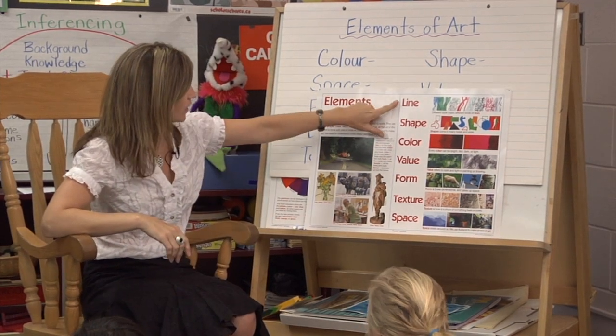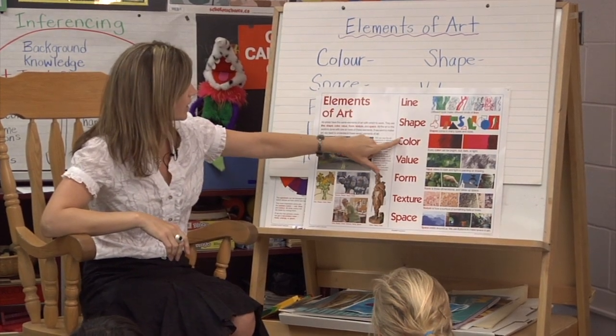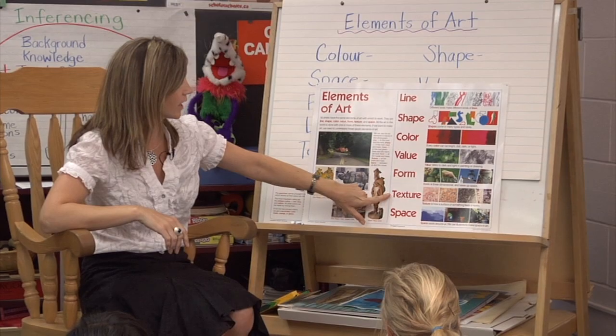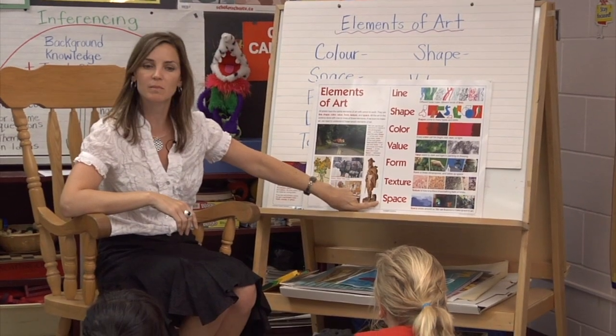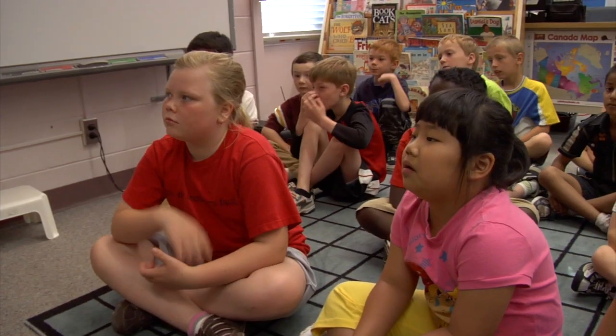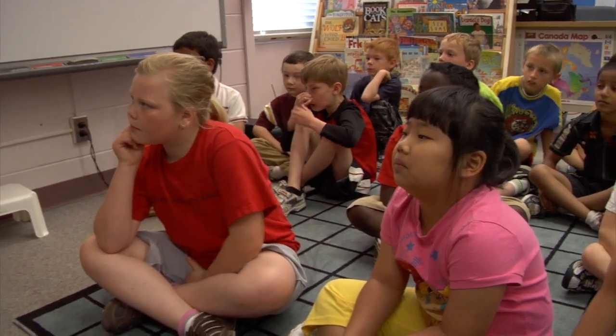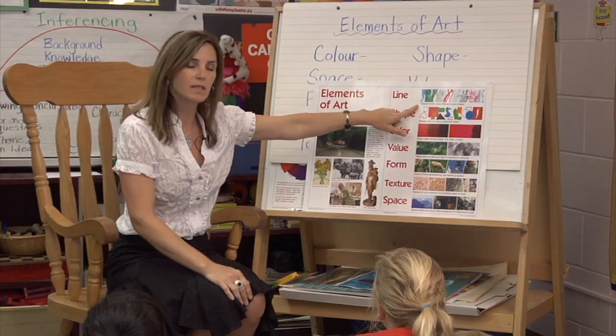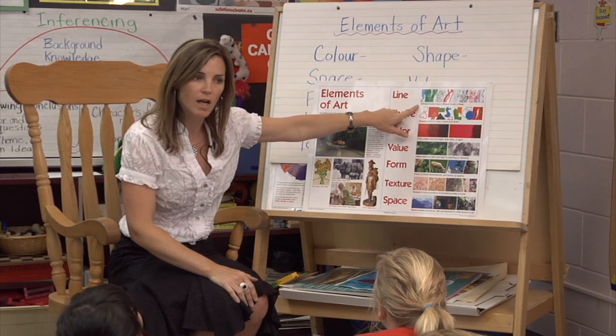So here we see them again: line, shape, colour, value, form, texture, and space. When we think about line, different tools make different kinds of lines. Can you tell me some of the different kinds of lines artists can create?